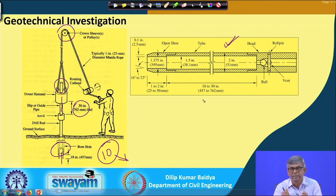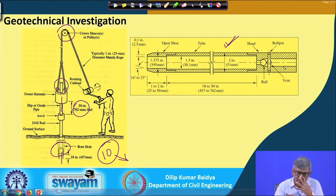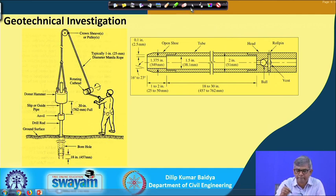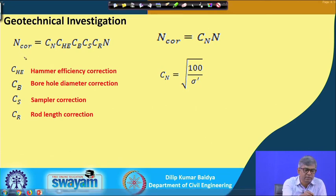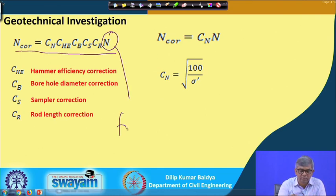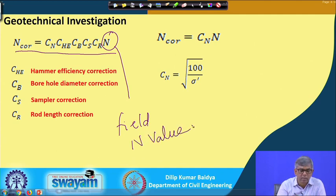When the sampler comes out, it can be split — it is a split sampler. You divide it into two parts, separate them, and see the soil inside, from which soil can be collected for different testing purposes. As mentioned, there are several corrections, and the field N value is what we record, subject to several correction factors.